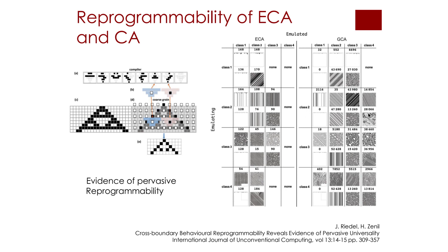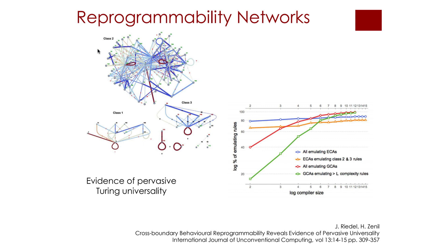With all this information we were able to reconstruct emulating networks, where two cellular automata would be connected by an edge if one was able to emulate the other. We found many interesting properties in such emulation networks, including long chains of emulations and also rule hubs that were more reprogrammable than others or more prone to be emulated by others, in some way reintroducing Wolfram classes, but not in a fundamental way, rather more pragmatically.